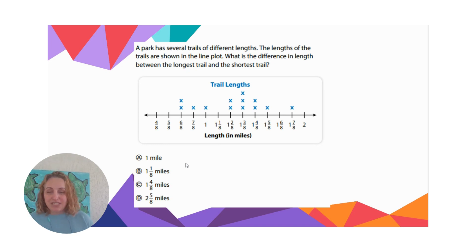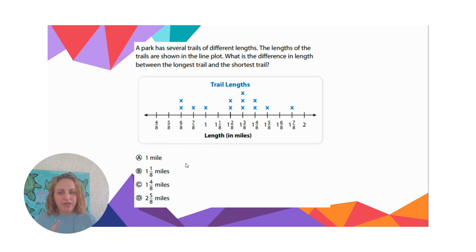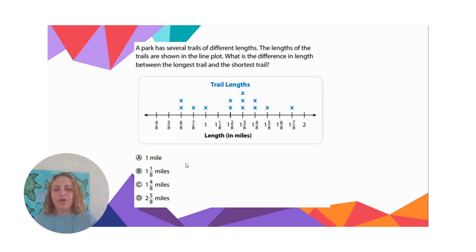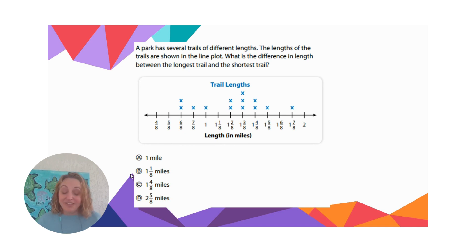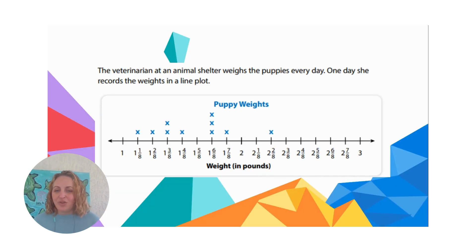You've had a chance to pause and answer. When you do that subtraction, you're doing seven eighths minus six eighths equals one eighth, and one whole minus nothing equals one whole. So the answer is B — one and one eighth miles. Is that what you got? All right, let's look at another one.